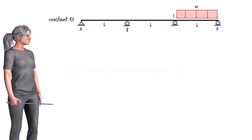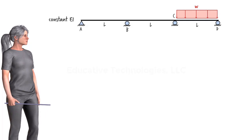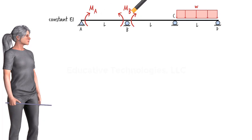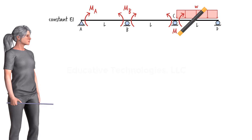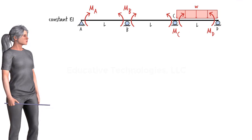Consider this three-span beam. The internal moments at four consecutive points A, B, C, and D are labeled accordingly. In this case, we need to write two three-moment equations.